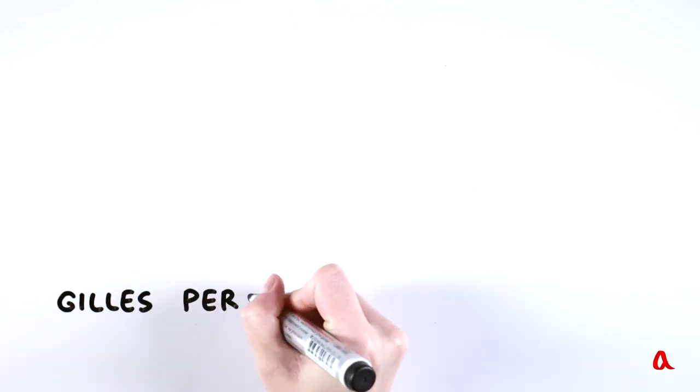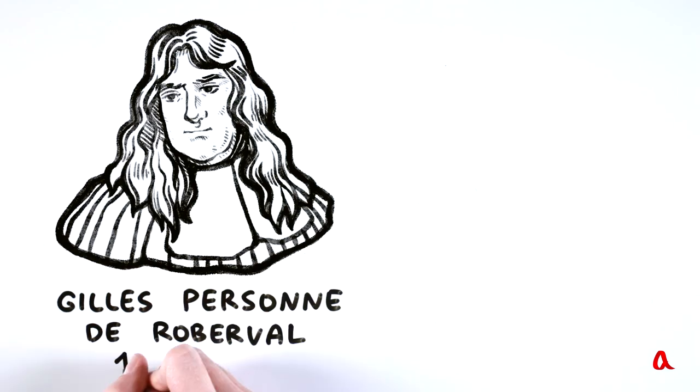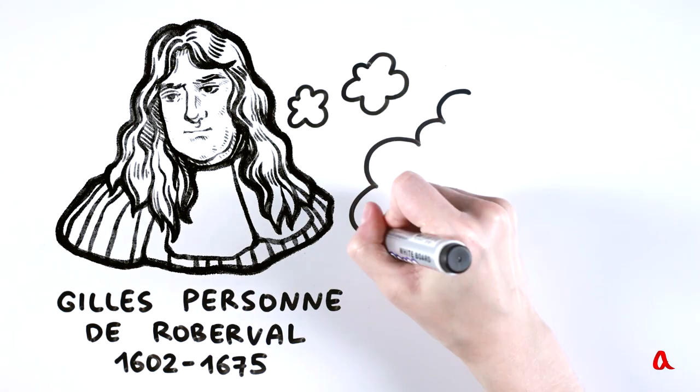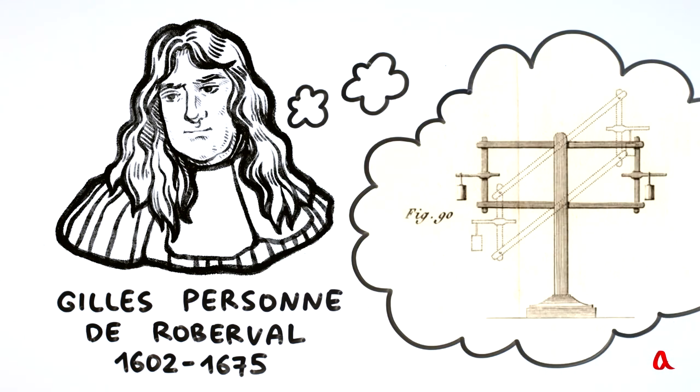This kind of balance was invented by a French scientist, Gilles Personne de Roberval. He presented it at a meeting of a newly created Paris Academy of Sciences in 1669. Their further modifications turned out to be very widely used.